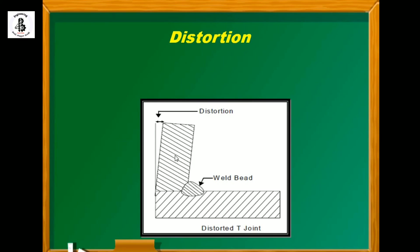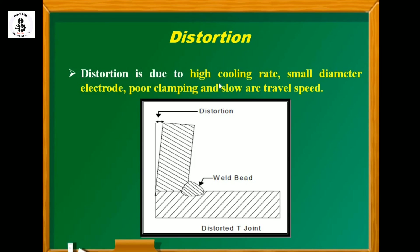Next is distortion — misalignment of both components in any kind of joint. Distortion is due to high cooling rate, small diameter electrodes, poor clamping, and slow arc travel speed. If there is uneven solidification of the weld, the material misaligns with the other material, resulting in incomplete or poor dimensional accuracy. This type of defect is known as distortion.